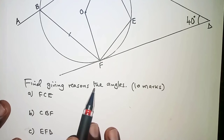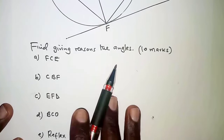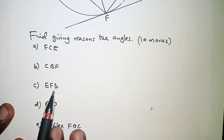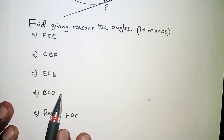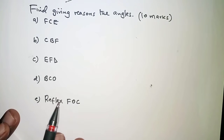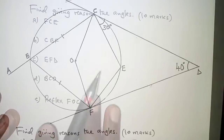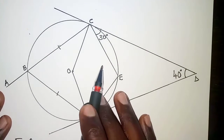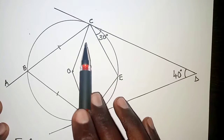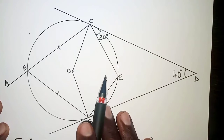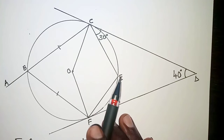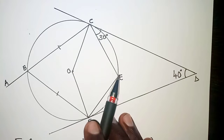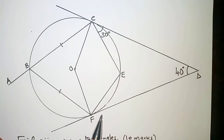Then the question that follows: find, giving reasons, the angles FCE, angle CBF, angle EFD, angle BCO, and finally the reflex angle FOC. In such questions, we are required to first fill in the missing angles in the diagram using all the properties necessary, and then from there answer the questions as required.